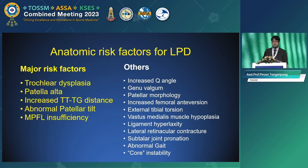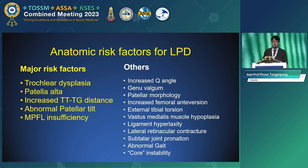The anatomic risk factors for lateral patella dislocation include major factors: trochlear dysplasia, patella alta, increased TT-TG distance, abnormal patella tilt, and MPFL insufficiency. Additional risk factors are also illustrated in the accompanying image.